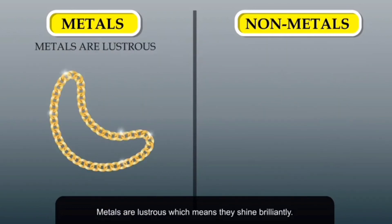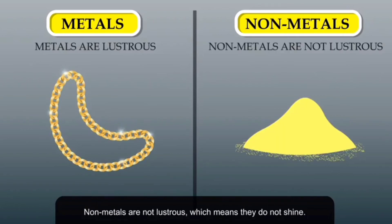Metals are lustrous, which means they shine brilliantly. Hence, ornaments are usually made up of metals. Non-metals are not lustrous, which means they do not shine.